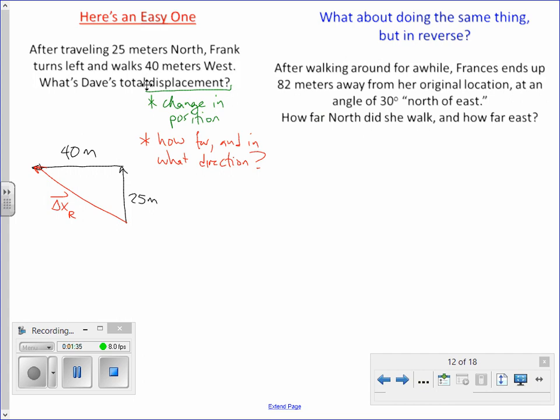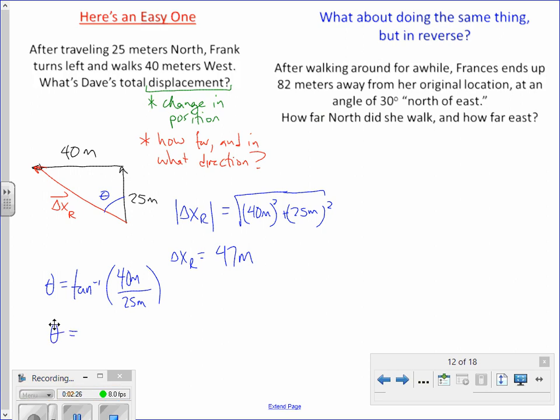I can find the magnitude by doing the Pythagorean theorem. That is, of course, the square root of 2,025, which is 47 meters. And here's a reasonable angle to find. That angle, by definition, is the inverse tangent of opposite 40 over adjacent 25. That's 58 degrees.